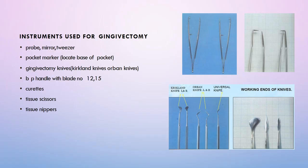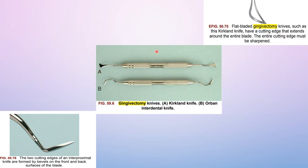Instruments used for gingivectomy include: periodontal probe, mirror, tweezers, and importantly the Crane-Kaplan pocket marker, which has two sides — mesial and distal. Gingivectomy knives include the Kirkland knife and Orban's knife. The Kirkland knife is a flat knife with a cutting edge extending around the entire blade. The Orban's knife is an interproximal knife with two cutting edges formed by bevels on the front and back surfaces of the blade. Curettes, tissue scissors, and tissue nippers are also used.